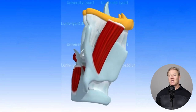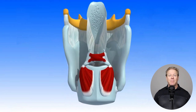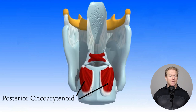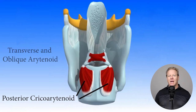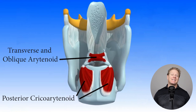Next, we will examine the posterior view of the larynx. The posterior cricothyroid muscles, located in this region, contract to abduct the vocal cords, spreading them apart. The transverse and oblique arytenoid muscles are responsible for adducting or bringing the vocal cords together.